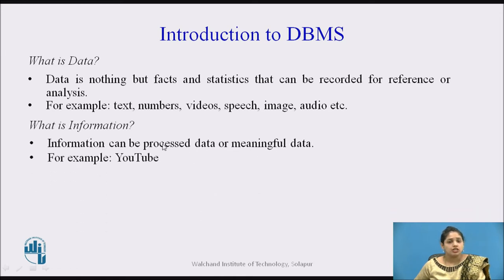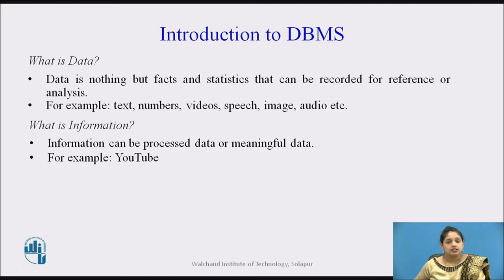What is information? Information is processed data or meaningful data. For example, on YouTube you have millions of videos, but information is what you specifically need. If you open the search tab and search for a particular video — for example, introduction to DBMS — that specific result is the information for you.